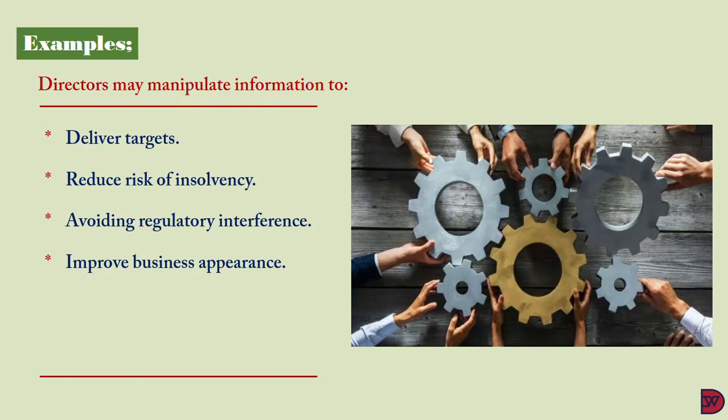They can also manipulate accounts to improve business performance, especially as part of preparation for an initial public offering or a sale — painting a better picture so investors feel the business is in good standing, thereby increasing the amount investors will pay. To reduce taxes, they might increase certain expenses. For instance, if required to use a reducing balance method of depreciation, they might instead choose the straight-line method, which reduces profits and therefore reduces taxes. They can also understate revenues — shifting revenue that occurred in one year into a subsequent year.